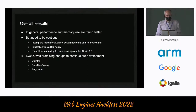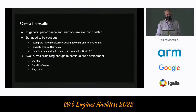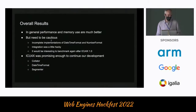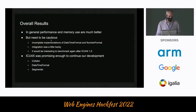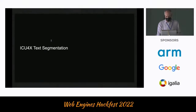Overall, performance and memory use are much better with ICU4X, but we need to be cautious because of the incomplete implementations at the time, and the integration itself was a little hacky — we were reading data straight from the file system instead of managing memory properly, which actually suggests we'd see better performance repeating these benchmarks. The results were promising enough that we decided to continue our involvement. Mozilla focused on collator development — collators sort strings in a language-dependent fashion — date/time format, and segmenter.